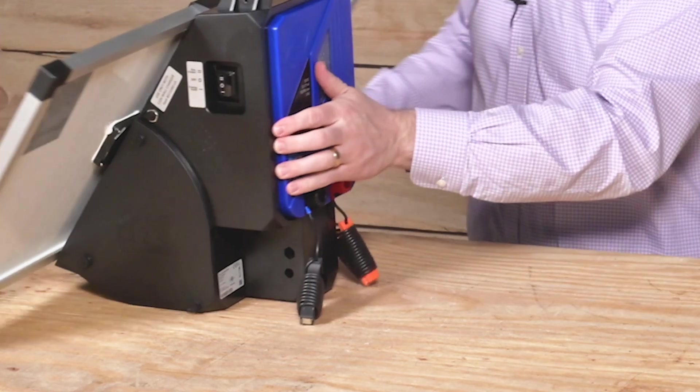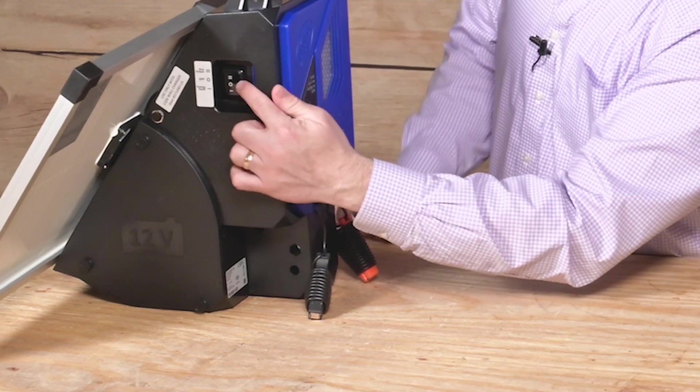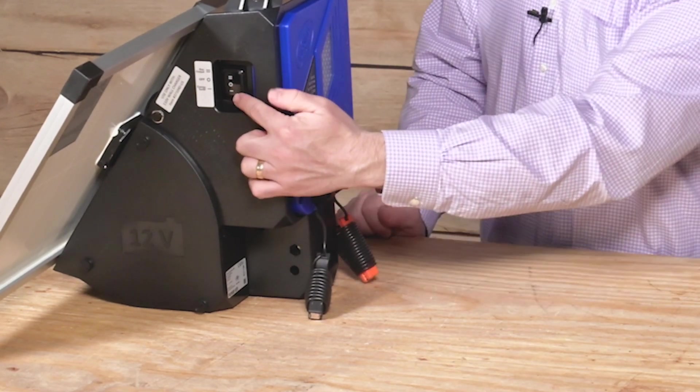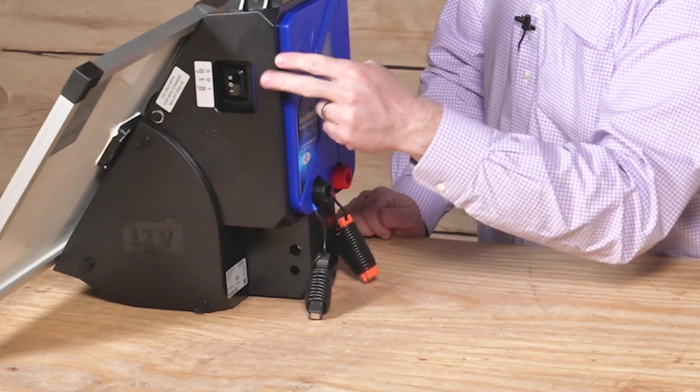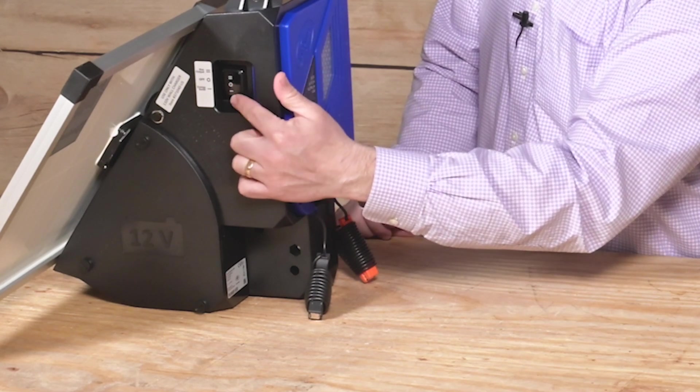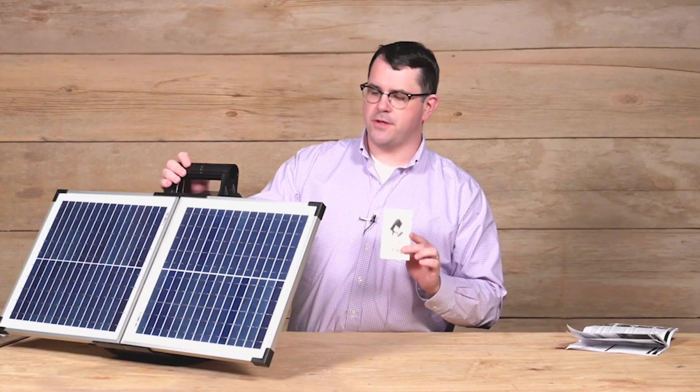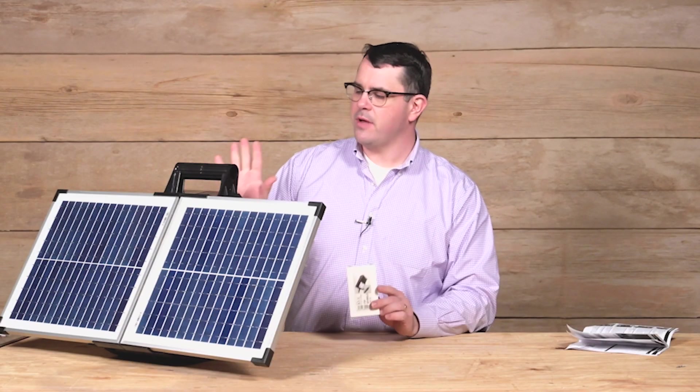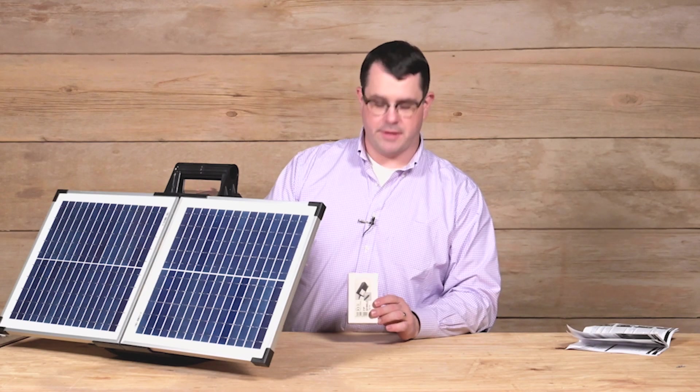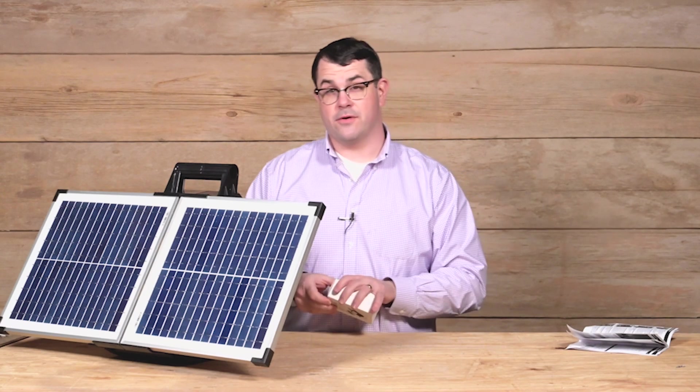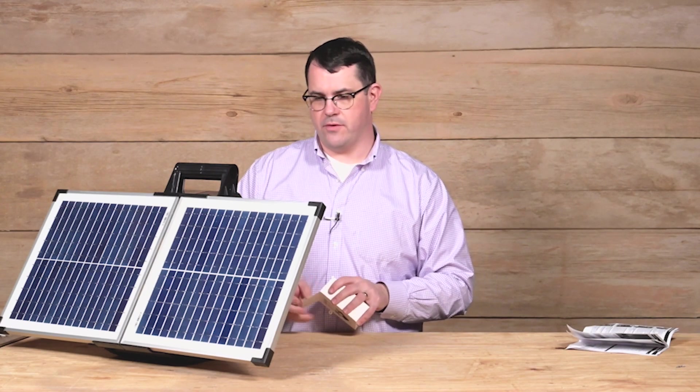There is an on off switch on the side. There is a two designation and a one designation. The two or the double line indicates full power, and the single line indicates half power on this Energizer. To recharge the unit if you are low on power, as in if this Energizer starts blinking with a red light or if your battery tests below 12.4 volts.